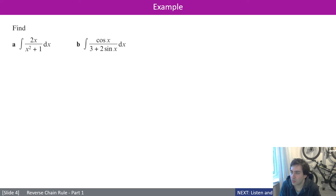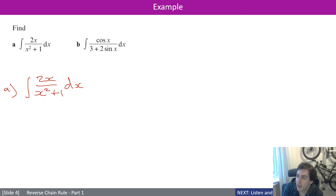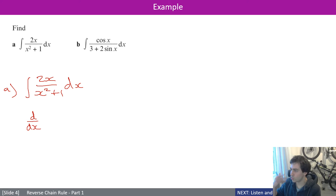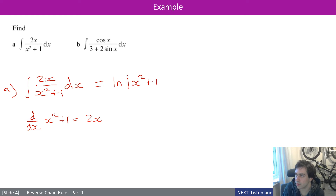Let's look at some examples. For part (a), finding the integral of 2x/(x² + 1): note that the derivative of x² + 1 equals 2x. The numerator is already exactly the derivative of the denominator, so you can immediately write ln|x² + 1| + C.